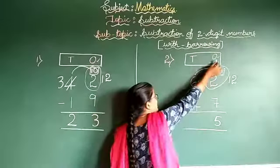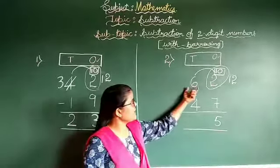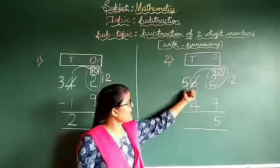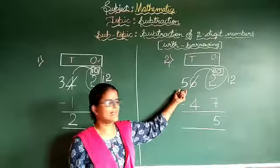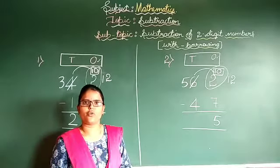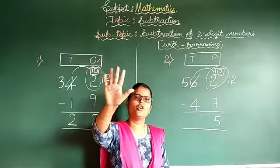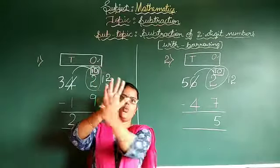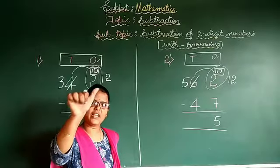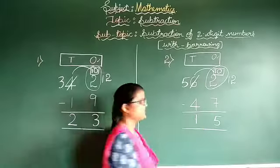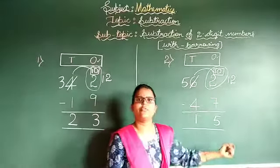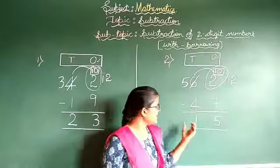Now for the tens place: cancel 6 and write its backward number, which is 5. Subtract 5 minus 4. Draw 5 lines and cancel 4 — only 1 finger is left. The difference is 1. Therefore, 62 minus 47 equals 15.